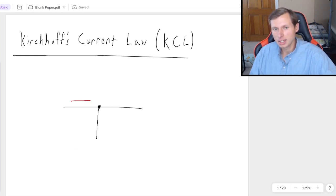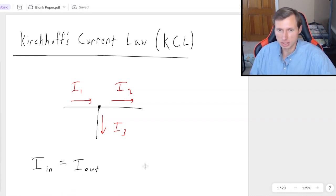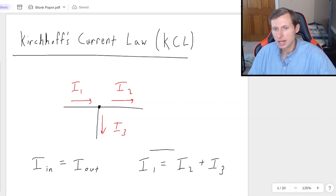And let's say hypothetically I have current I1 pointing this way, current I2 pointing that way, and current I3 pointing that way. The current law says all the currents pointing in to the junction must equal all the currents pointing out of the junction. And so what that looks like here, the current going in is only I1. So I1 equals the two currents going out, I2 and I3. And I'm simply going to write I2 plus I3, and there's my equation for KCL.